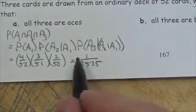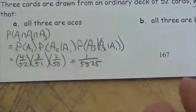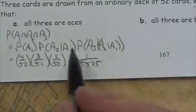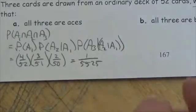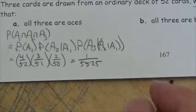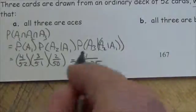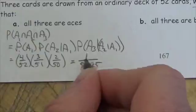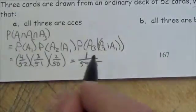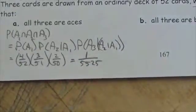So pulling those three cards out, there's only a 1 out of 5525 chance that could happen where you would get ace, ace, ace.